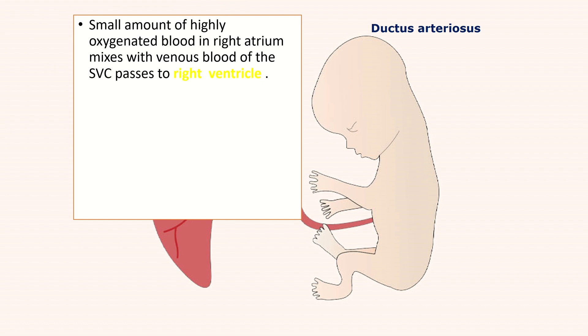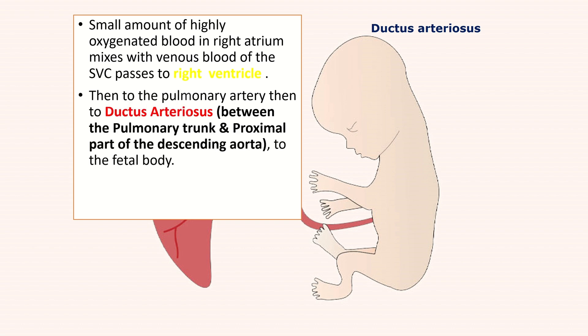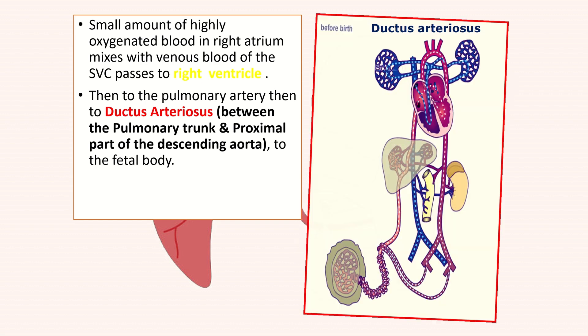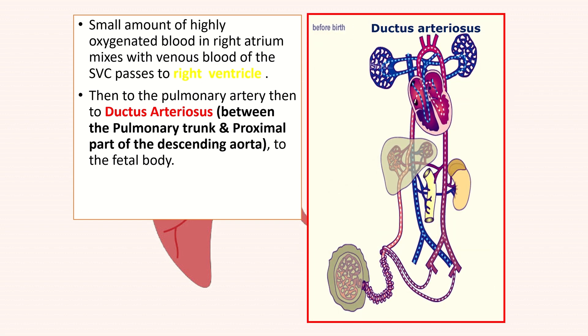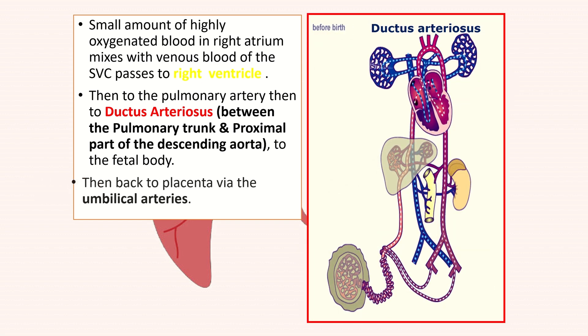The blood then goes to the pulmonary artery, then to the ductus arteriosus. The ductus arteriosus is the vessel between the pulmonary trunk and the proximal part of the descending aorta, and that goes to the fetal body. Ultimately the blood goes back to the placenta via the umbilical arteries.